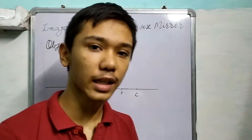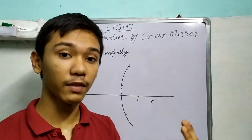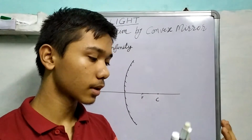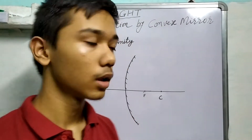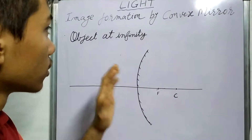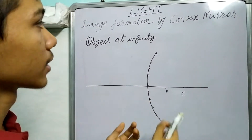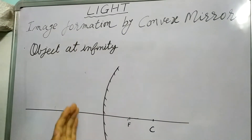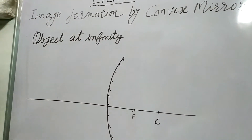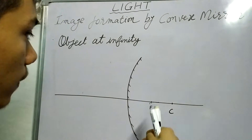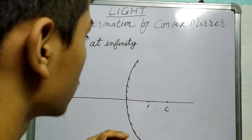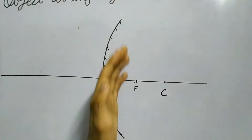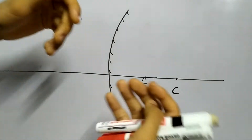Till now we have discussed the cases when we dealt with a concave mirror — a converging mirror — which converges the rays of light thrown at it. Now let us deal with another class of mirrors called convex mirrors. A convex mirror has a reflecting surface which is outwards, and in general it diverges rays of light thrown at it.